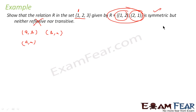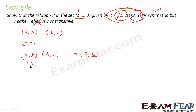For transitive: if (1, 2) and (2, 1) are members of this relation, then (1, 1) should also exist, but (1, 1) is not in this set. So it is not transitive. Since the whole set is explicitly given, it is very easy to verify.